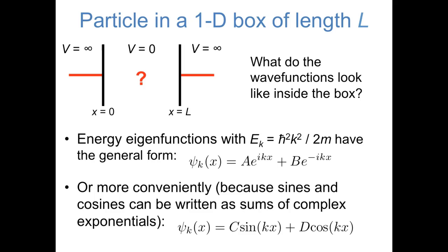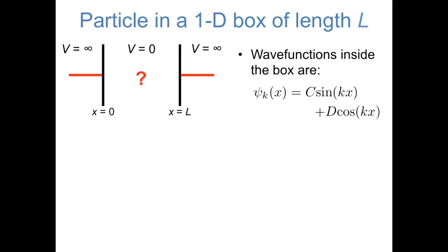Which form we use is really a matter of convenience. And in this case, for a particle in a box, it turns out sines and cosines will be more convenient. So our wave functions inside the box have the following form: some constant c times sine of kx, plus some other constant d times cosine of kx. Notice that these wave functions have three unknowns: c, d, and k. So really, what we're trying to do here is solve for those three unknowns.